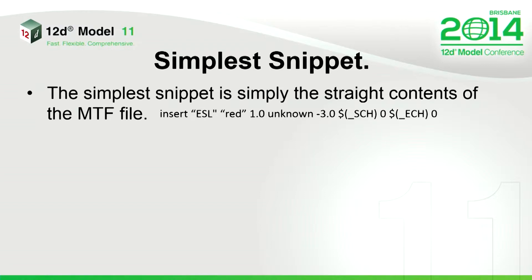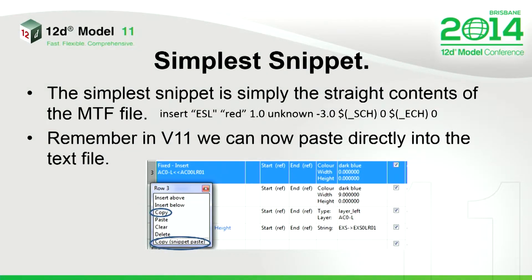The simplest snippet is just the straight contents of the MTF file. In this case we're inserting a string ESL — it's red, it's one meter wide, it's at 3%, and it goes from the start to the end of the reference string. As Pete showed yesterday, in V11 now you can cut and paste directly in, which is very advantageous. You create the modifier you'd like, use copy snippet paste, and the magic is — as you see above there with that underscore start change and underscore end change — it pastes that syntax in for you automatically. Previously in V10 you had the big bulky name-position-modifier-start-name syntax. We've removed that for V11.